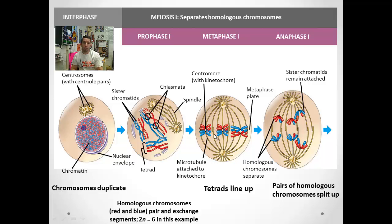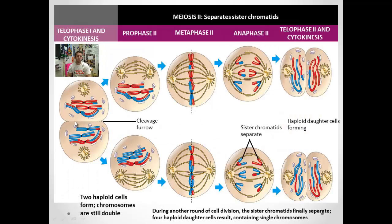In metaphase I, we're dealing with these homologous pairs lined up at the equator — they can be oriented either way, randomly. They are assorted independently of one another, completely randomly. This is another source of genetic variation — independent assortment in metaphase I. We go to anaphase I where these homologues are pulled apart, one going in each direction — still diploid, still two versions of every chromosome. In telophase I, we have a cleavage furrow forming through cytokinesis, still diploid, and then this splits.